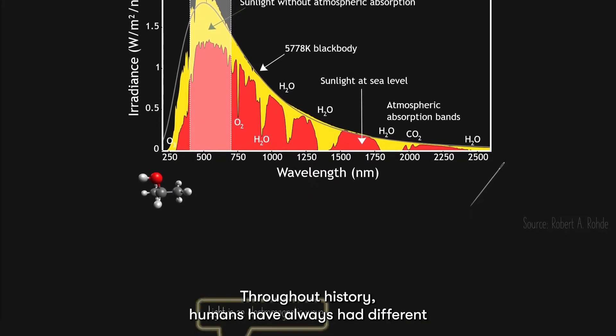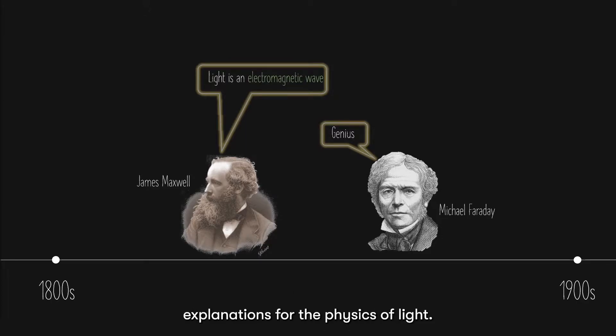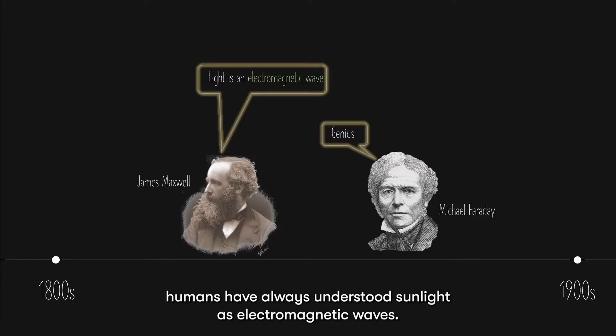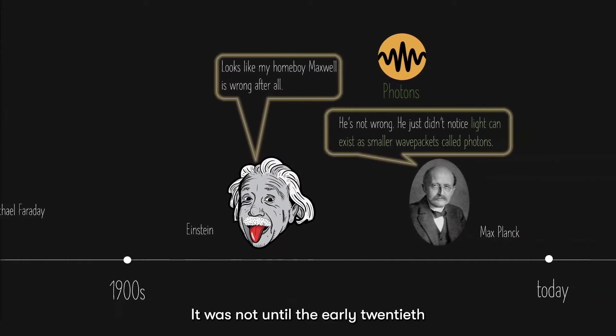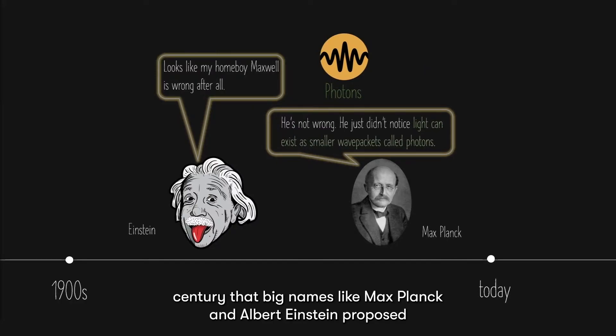Throughout history, humans have always had different explanations for the physics of light. From the 1800s to the early 20th century, humans have always understood sunlight as electromagnetic waves. Those are the days of Michael Faraday and James Maxwell. It was not until the early 20th century that big names like Max Planck and Albert Einstein proposed that light is not just a wave, but rather small packets of waves called photons.